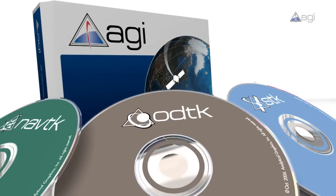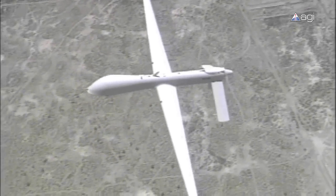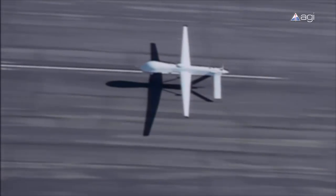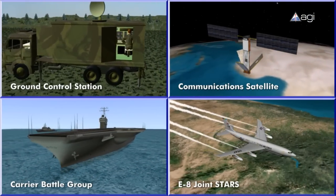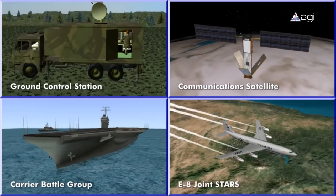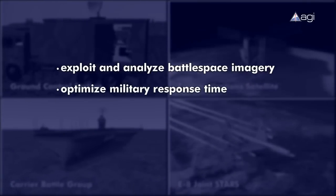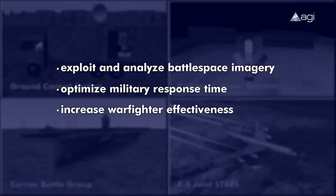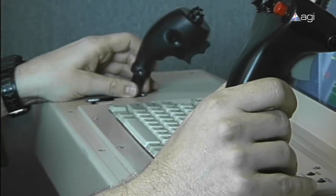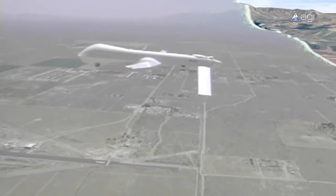Developed for the aerospace community, Analytical Graphics has produced a suite of commercially available off-the-shelf software products to support the Predator system. By integrating the Predator system with other battlefield land, sea, air, and space assets, AGI technology provides operational commanders with the tactical and strategic intelligence necessary to exploit and analyze battlespace imagery, optimize military response time, and increase warfighter effectiveness with the ability to monitor and target enemy positions. From the imagery analyst interpreting surveillance imagery, to the field commander making informed decisions on enemy capabilities, AGI's technology is ready to assist with all phases of Predator missions.